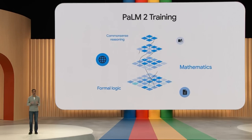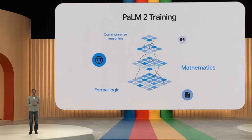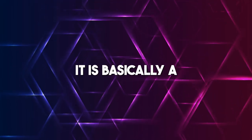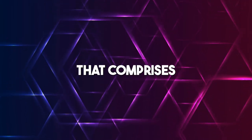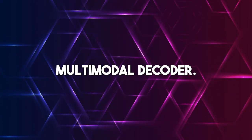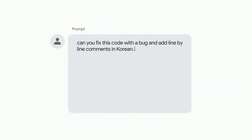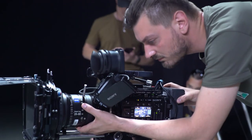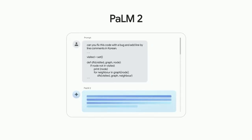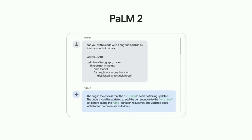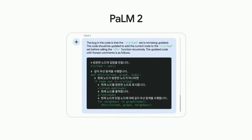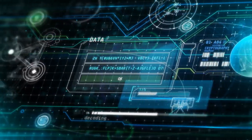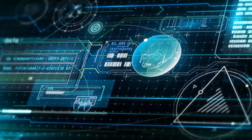One thing we should really pay attention to is the structure Google has built this large language model on. It is basically a two-way model comprising a multimodal encoder and a multimodal decoder. The encoder receives the prompt from the user — be it text, image, video, or audio — and converts the data into a language the decoder can understand while highlighting key details. Then it becomes the decoder's job to understand, process, and give out the required output in the required format.